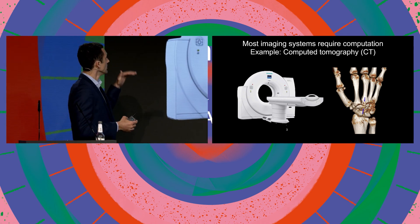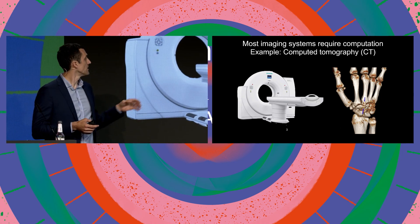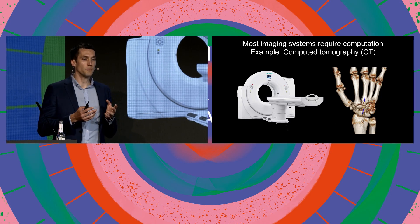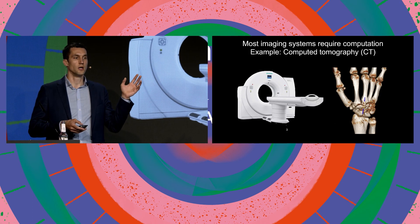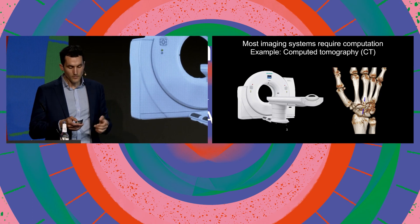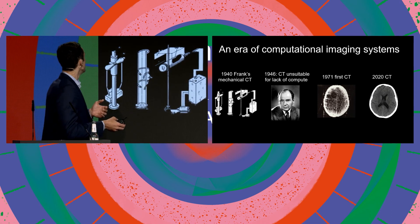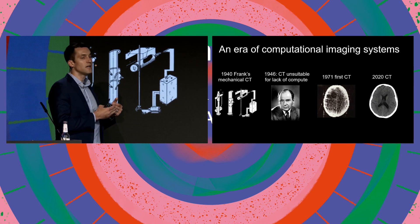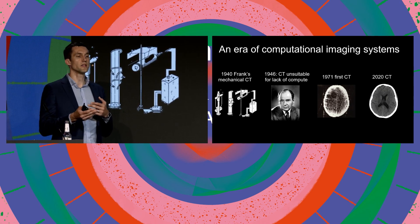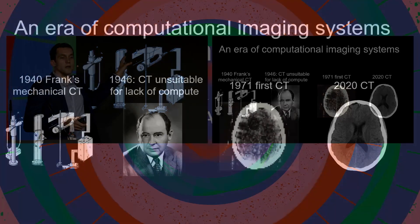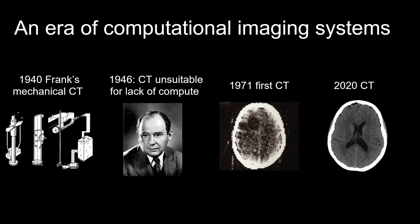The way CT works is you go into the machine, the machine collects measurements, and those measurements are stitched together in a very complicated way to generate a 3D representation — of your hand in this case. There is really an era of computational imaging systems. What's very interesting is that this idea of using computation to generate images is very old — older than computers themselves. In the 1940s, a German engineer invented a system to do all these computations in a mechanical way. It didn't work very well, so we had to wait until the 1970s until computers were sufficiently fast to do computer tomography.